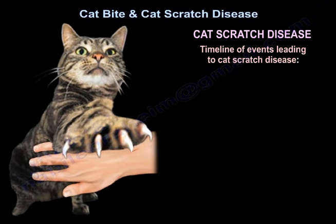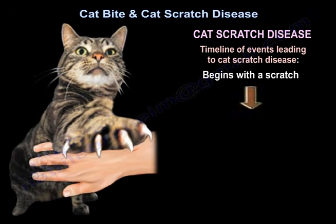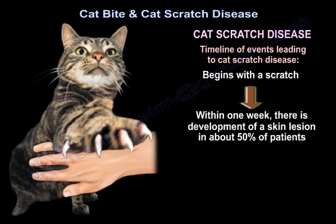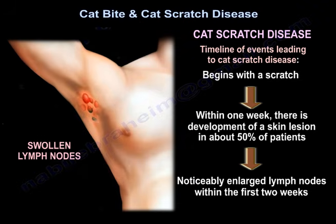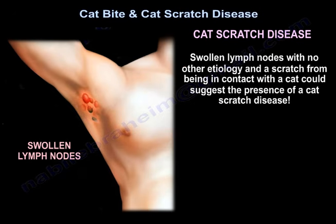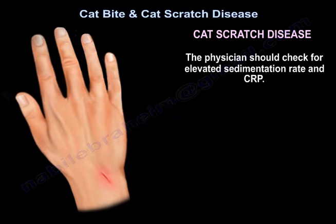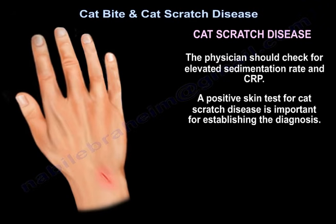The timeline of events: it begins with a scratch, and within one week there is development of a skin lesion. In about 50 percent of patients, there will be noticeably enlarged lymph nodes within the first two weeks. Swollen lymph nodes with no other etiology and a history of cat contact could suggest cat scratch disease. The physician should check for elevated sedimentation rate and CRP. A positive skin test is important for establishing the diagnosis.